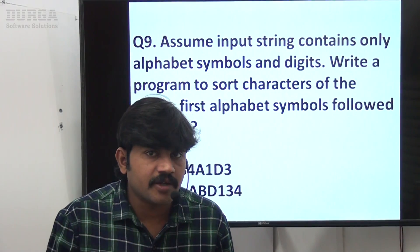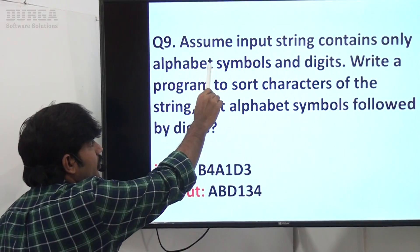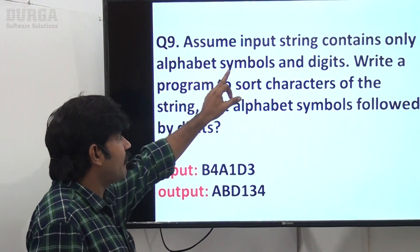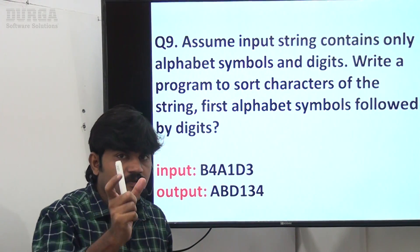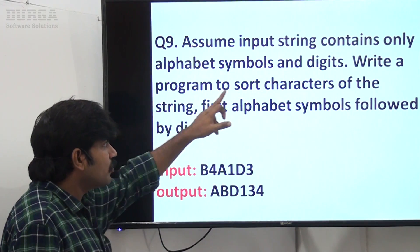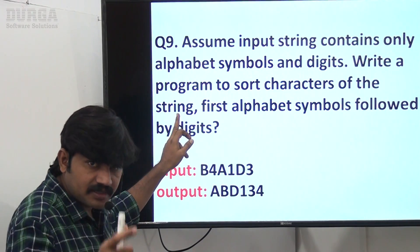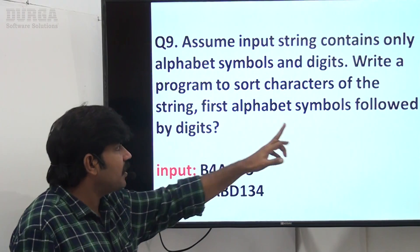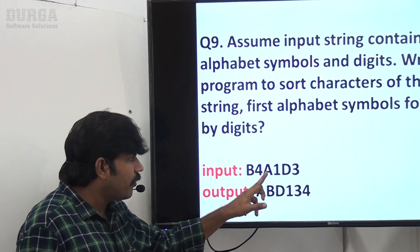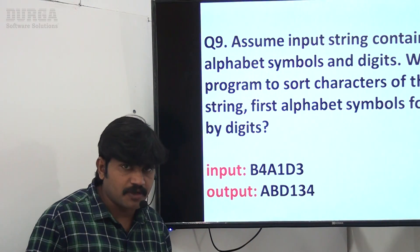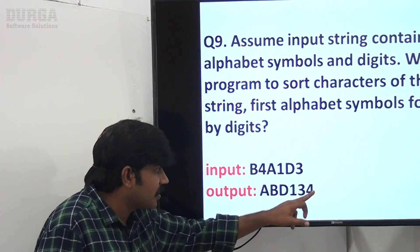Hi friends, the next equation related to string is: assume input string contains only alphabet symbols and digits — an alphanumeric string. Write a program to sort the characters of the string. For example, if the input is B4A1B3, then the expected output is ABD134 — first alphabet symbols followed by digits.